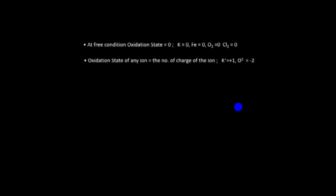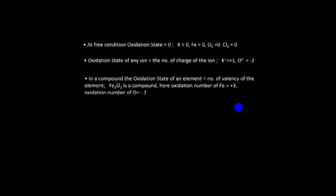Rule number two: the oxidation state of any ion is equal to the charge of the ion. For example, the potassium ion has charge plus one, so oxidation number is plus one. The oxide ion has charge minus two, so oxidation number is minus two.